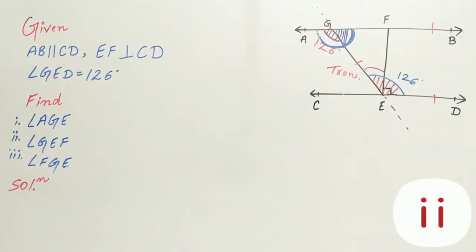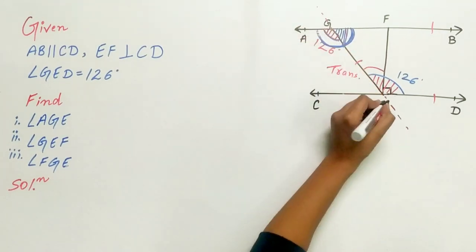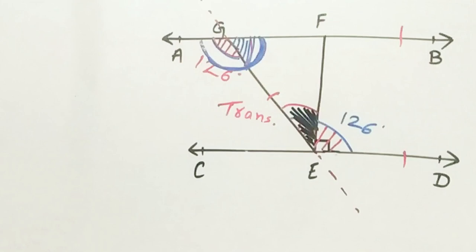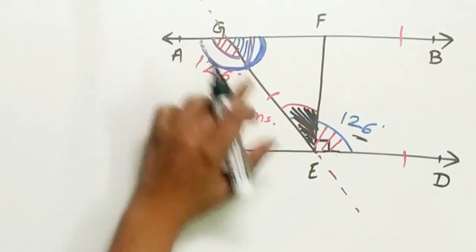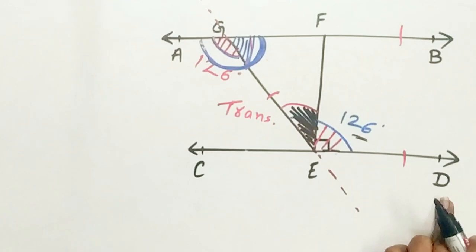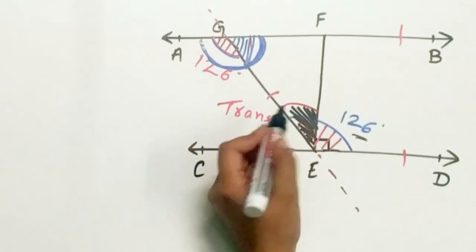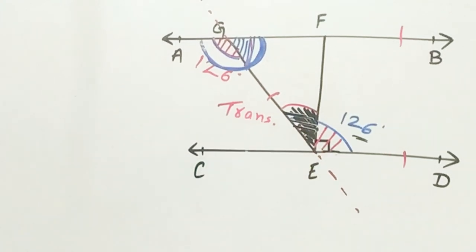Let's move to the second part. We have to find angle GEF. That is this angle. We know angle GED is 126 degrees, and angle GED is made up of angle GEF plus angle FED. We already know the value of FED. Hence, we can easily find the value of GEF.